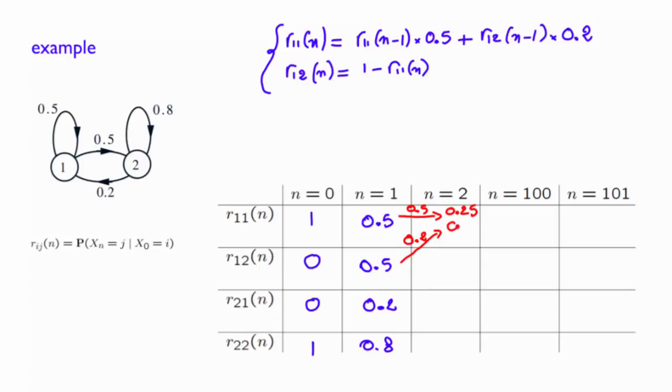So here we obtain a total probability of 0.25. Here, probability of 0.10. And when you sum these two probabilities, you obtain 0.35, which is r11 of 2. And as a result, you get 0.65 for r12 of 2.